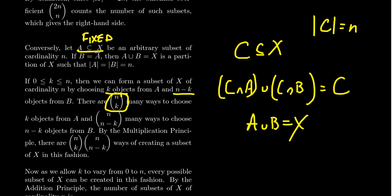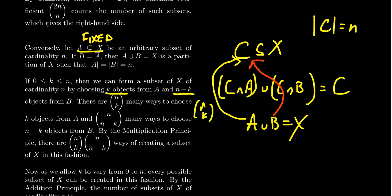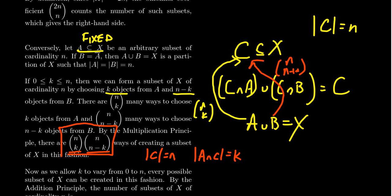We randomly choose n minus k elements from B — there are n choose n minus k ways to do that. By the multiplication principle, there are n choose k times n choose n minus k ways of forming such a subset C of X where C has cardinality n and the intersection between A and C has cardinality k. So for this particular value of k, there are n choose k ways to choose elements from A and n choose n minus k ways to choose elements from B.